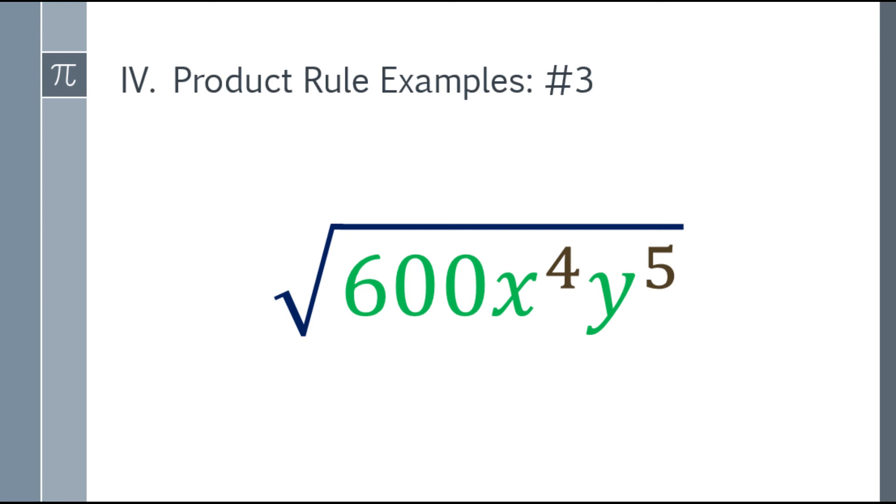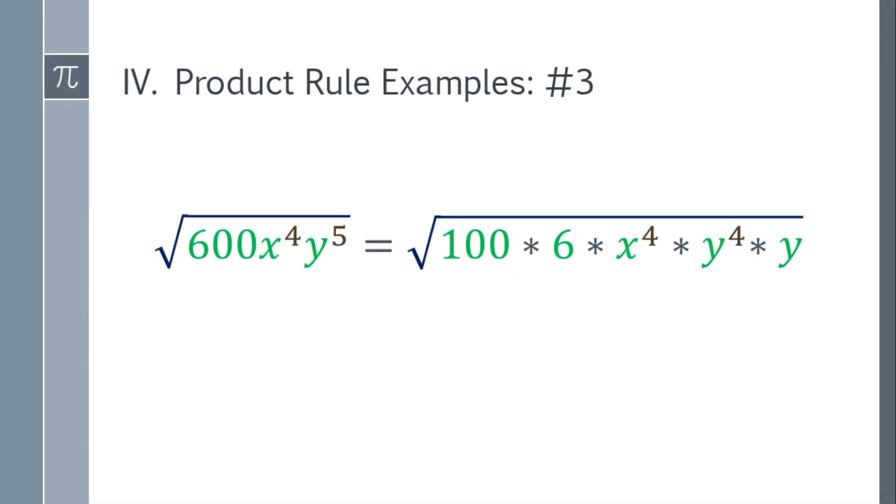At madili naman din yung sa variables. So let's start. So 600. So pwede natin gawin siyang 100 times nang 6, kasi yung 100 is a perfect square.